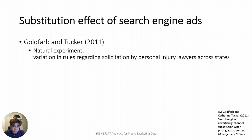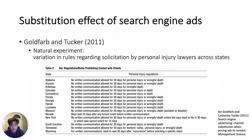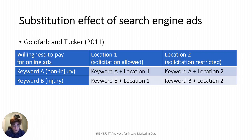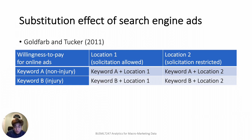As of 2007, a rule banning solicitation by personal injury lawyers for a period after a personal injury or death from accident was still effective in some states — sometimes called 'ambulance chasing.' As shown in this table, some state bar regulations still prohibit lawyers from directly contacting potential clients who have recently sustained an accident or injury. The authors focus on this difference between states. For simplicity, suppose there are two locations and two online search keywords for legal services: Keyword A for non-injury cases like divorce, and Keyword B for injury cases. Location 1 is in a state where solicitation is allowed; Location 2 is in a state where it is not allowed for injury cases.